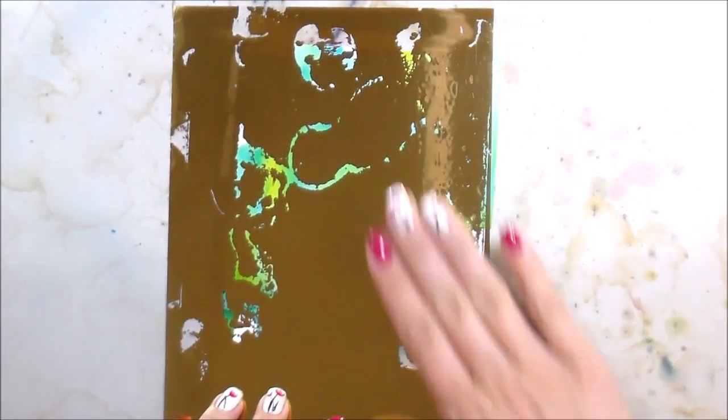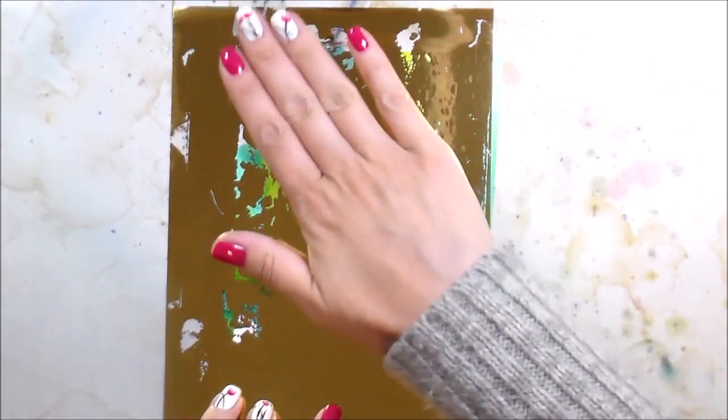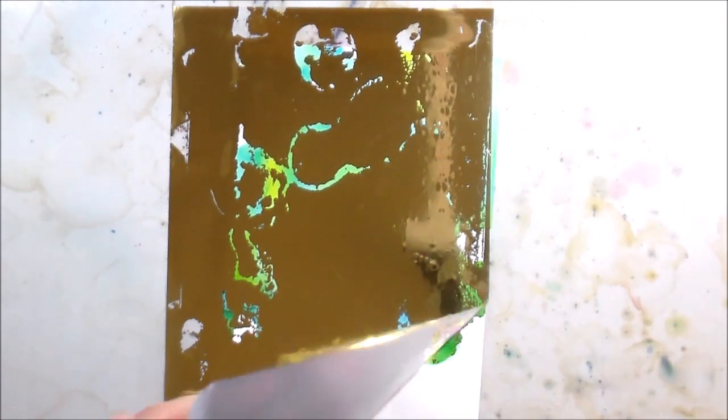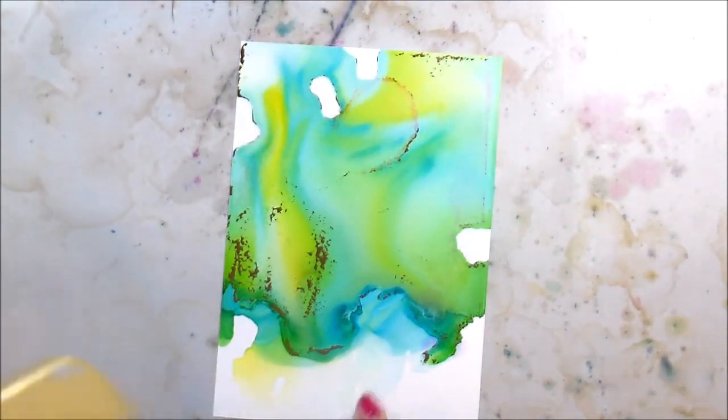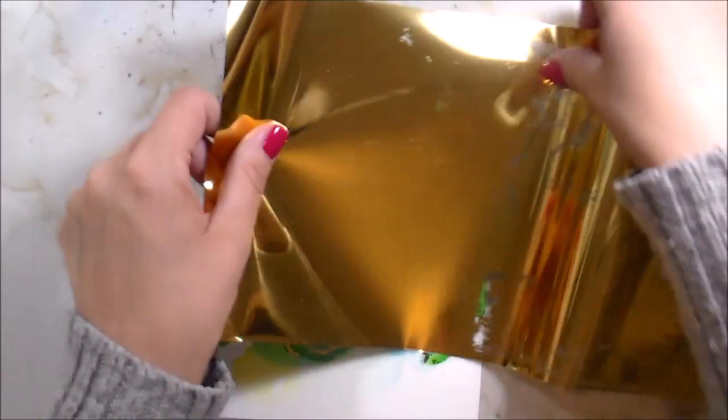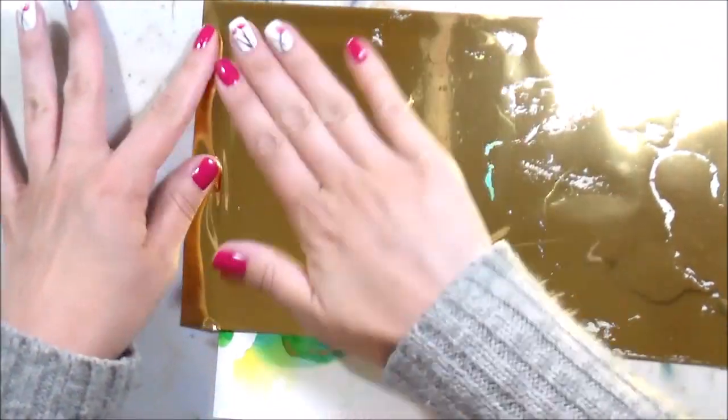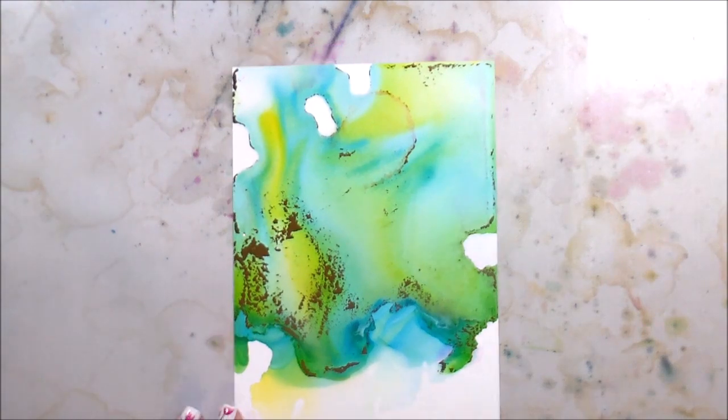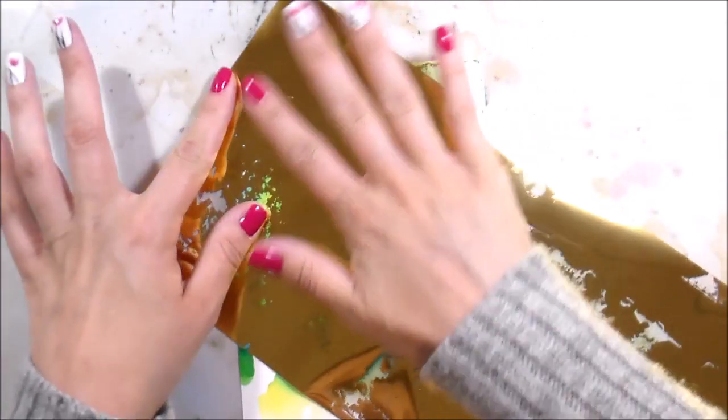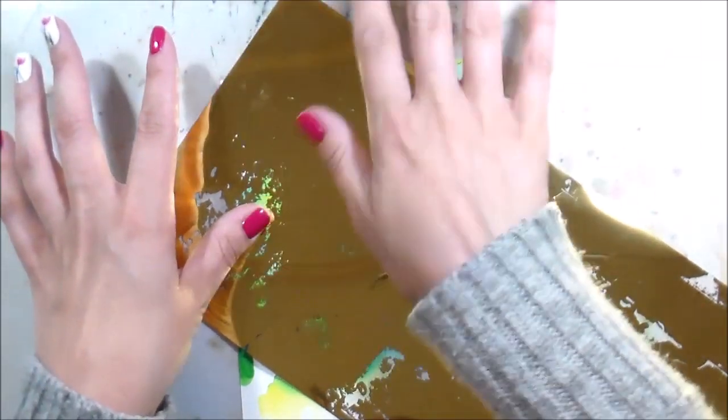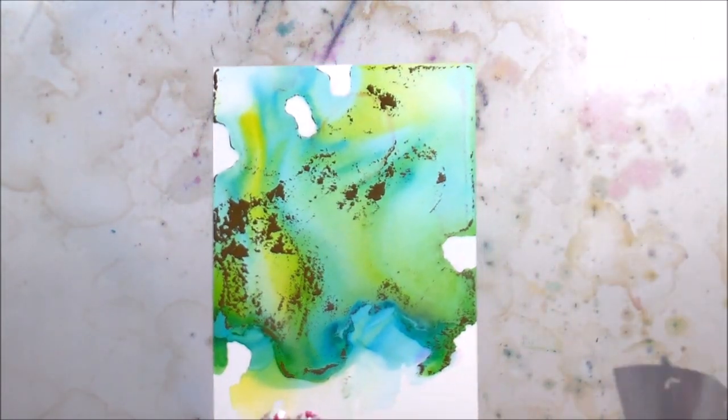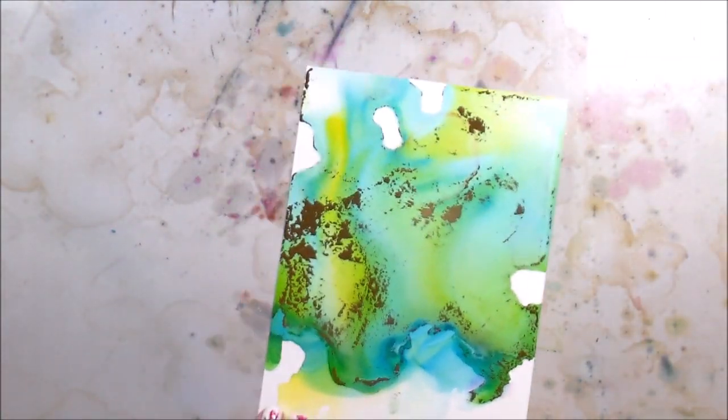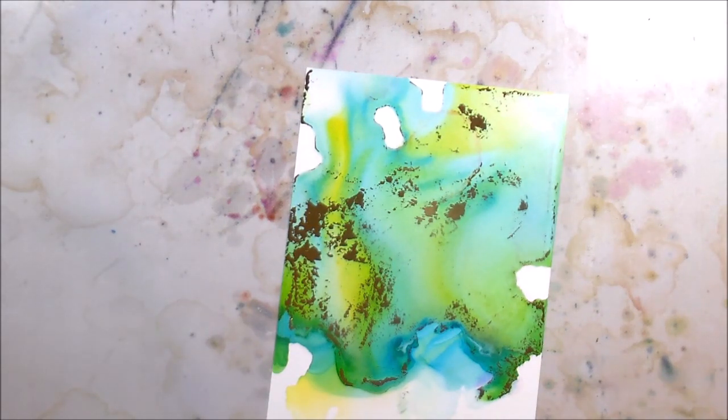Now I've let my piece dry for about two to three minutes because you don't want it so wet that you're going to pick up all that ink back up. The parts where your ink has collected will be sticky and that's what's going to pick up this gold foil.